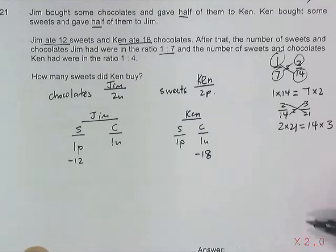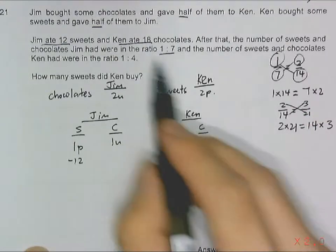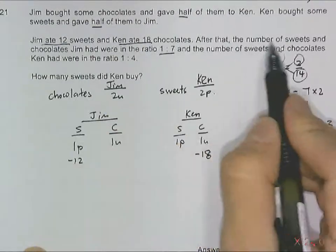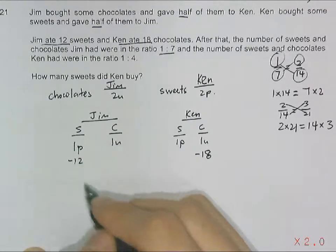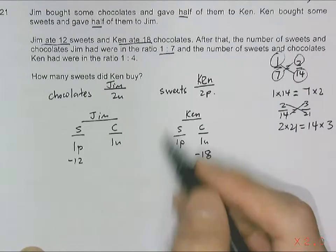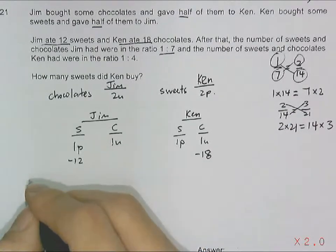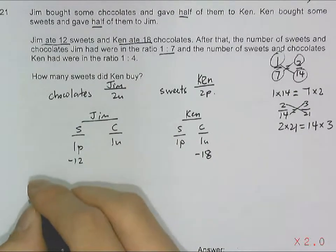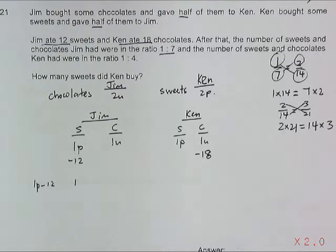We need to understand how this 1 over 7 comes about. The 1 is the number of sweets that Jim has - it has become 1 part minus 12. So I can rewrite this in the same form as the fraction: 1 part minus 12. This becomes the 1 out of 7.